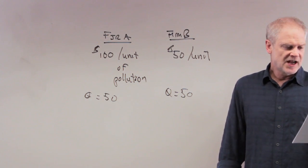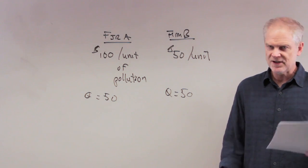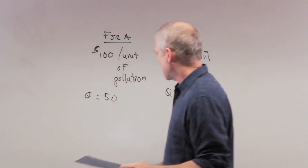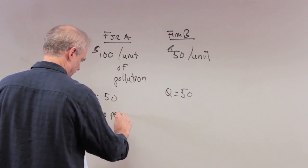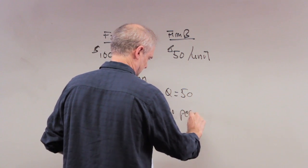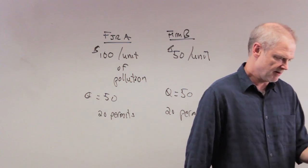Now the government gives each firm 20 pollution permits. That means they have the right to pollute 20 units. So now firm A gets 20 permits, and firm B gets 20 permits.